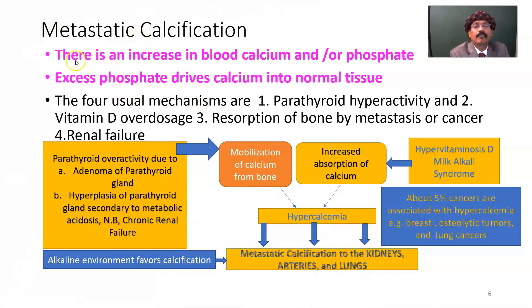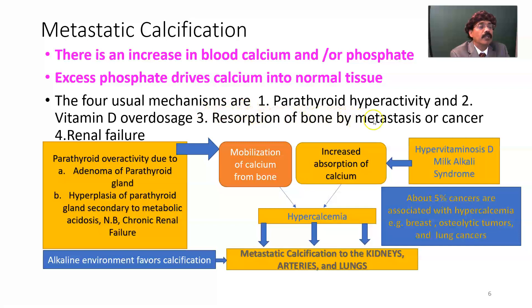Metastatic calcification involves an increase in blood calcium or phosphate; excess phosphate drives calcium into normal tissue. There are four usual mechanisms: parathyroid hyperactivity, vitamin D overdose, resorption of bone by metastasis or cancer, and renal failure.